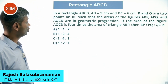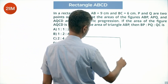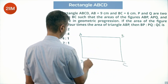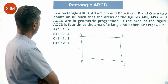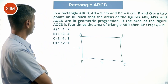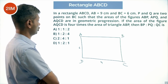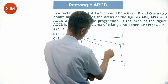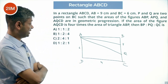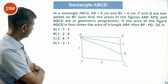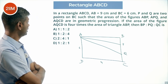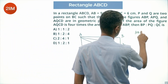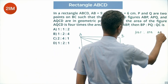In a rectangle ABCD, AB is 9 centimeters and BC is 6 centimeters. P and Q are two points on BC such that the areas of figures ABP, APQ, and AQCD are in geometric progression. We need to find the ratio of these areas.